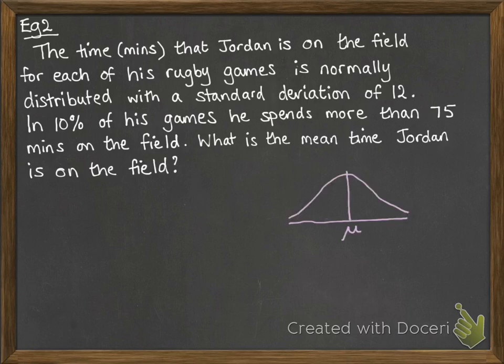So, draw yourself a picture. We're trying to work out the mean μ. Now, this 10% is that he will spend more than 75 minutes on the field, so that's the top 10% of all the time spent during his games. That will be above 75. Then we've got a standard deviation is 12.